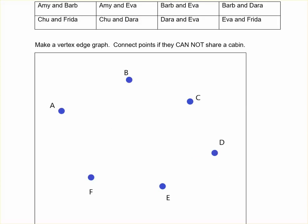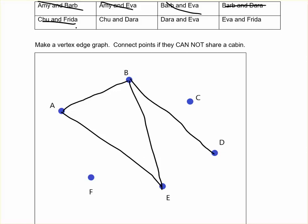Now we're going to connect the pairs of people who cannot be together. So first one says Amy and Barb - make a line connecting Amy and Barb. Amy and Eva. Barb and Eva. Barb and Dara. Chu and Frida. Chu and Dara. Dara and Eva and Eva and Frida. There's my vertex-edge graph.